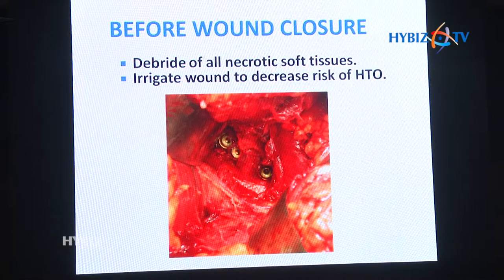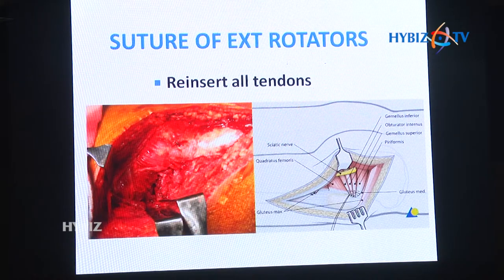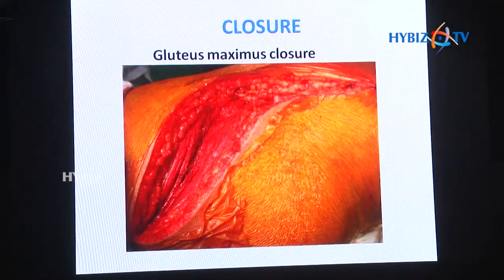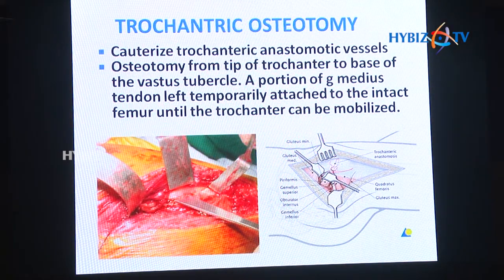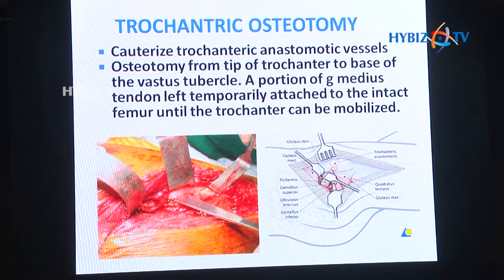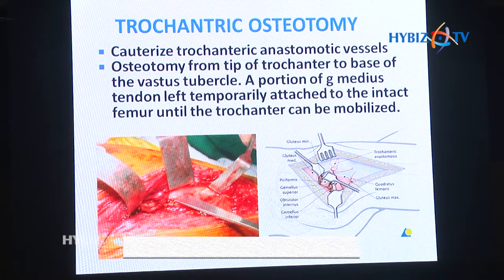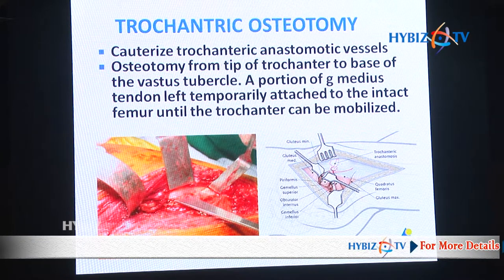You must reinsert all the tendons and then the wound is closed. In cases where you want to visualize the femoral head or there is a supra-acetabular fracture, you have to perform a trochanteric osteotomy. You have to clear the trochanteric region and try to establish the anastomosis of the vessels. The osteotomy should start from the greater trochanter to the base of the vastus tubercle.